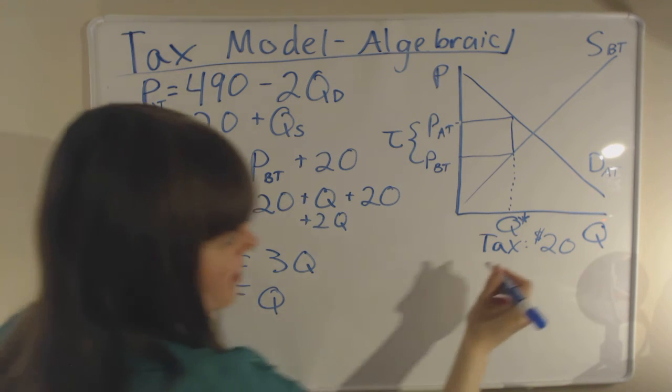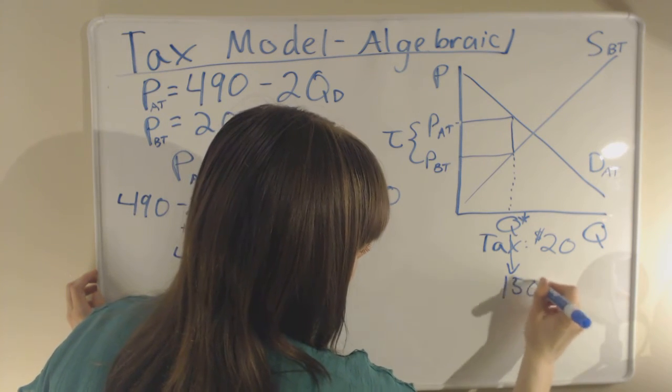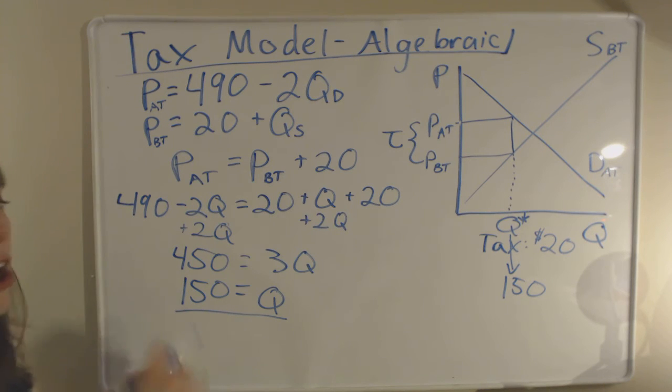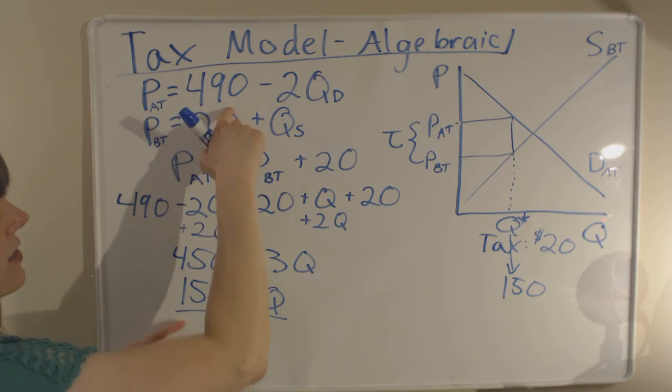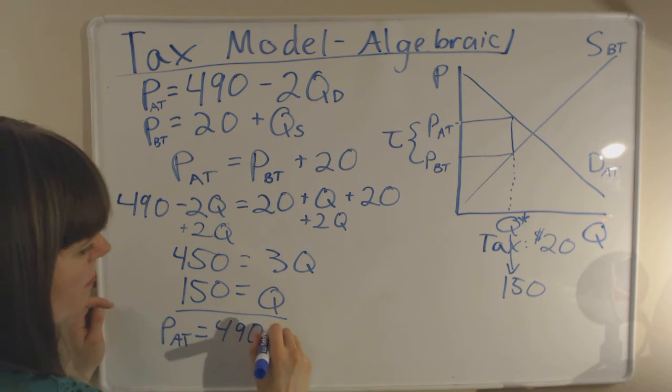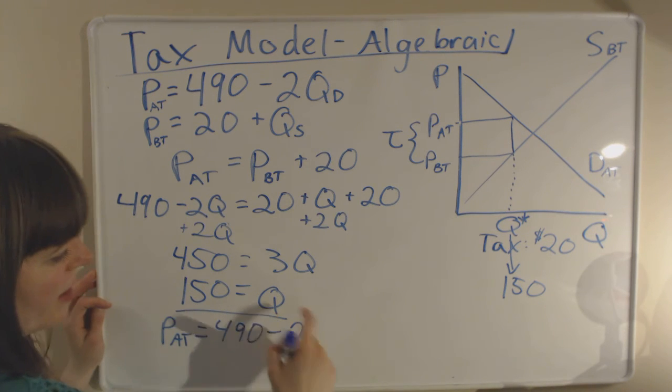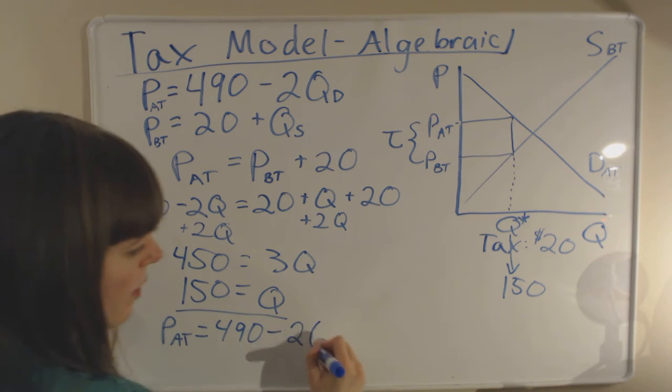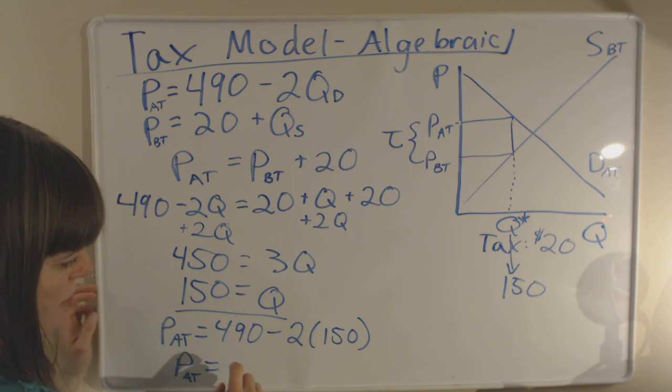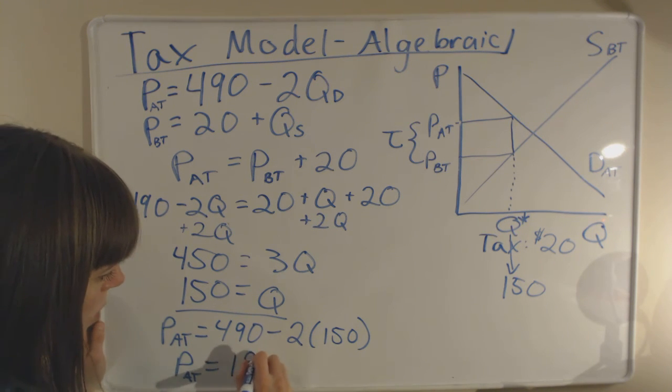So our equilibrium quantity is equal to 150. Now we just need to solve for our before-tax price and our after-tax price. So we can just do that by plugging back into the demand curve up here. So our price after-tax is going to equal 490 minus 2 times QD, and Q in this case will be 150. So 490 minus 300 means our price after-tax will be 190.